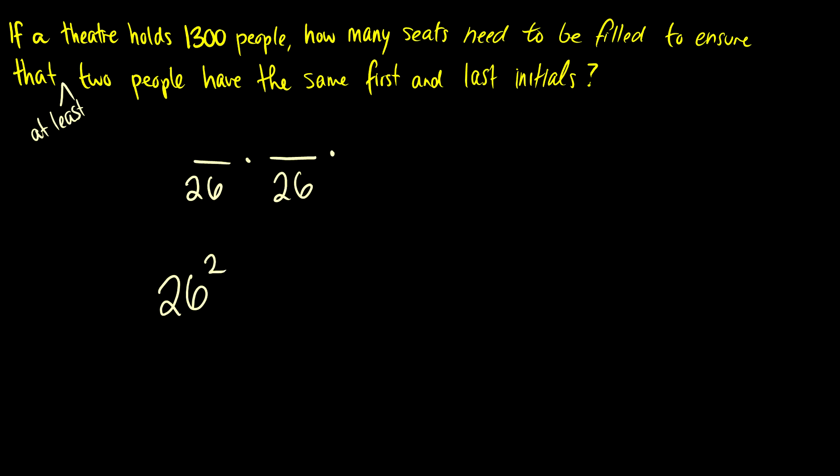So that means if we have 26 squared people, then everyone could fill up all those possible sets of initials, which means if we add one to that, we're guaranteed that somebody has the same first and last initial as somebody else. So here is our solution, 26 squared plus 1.